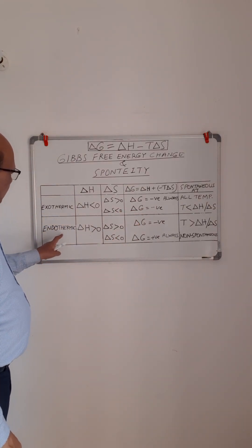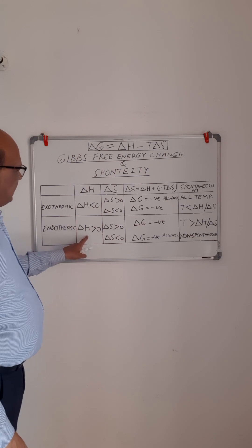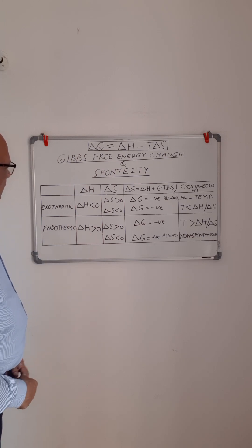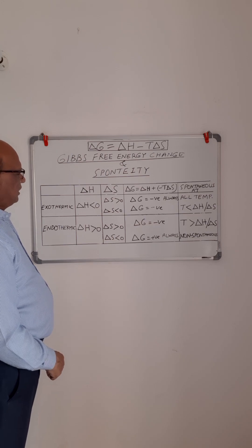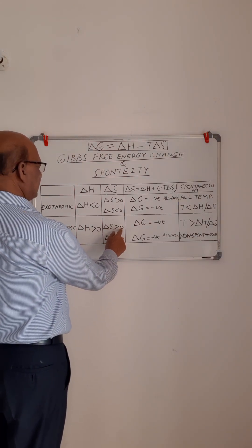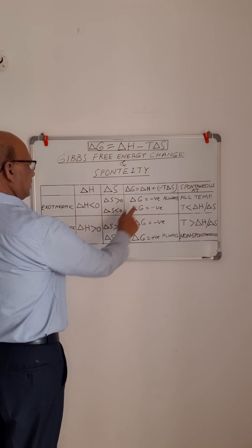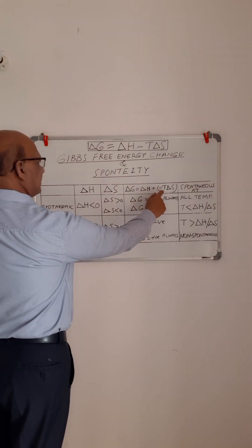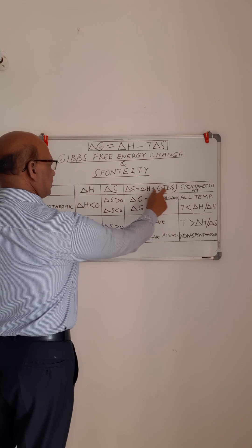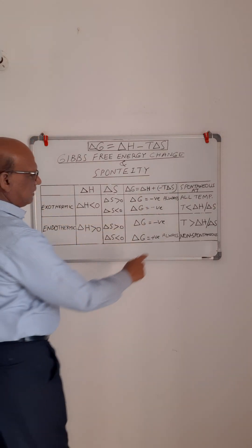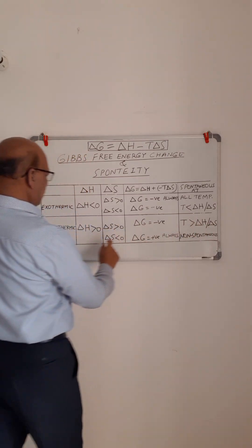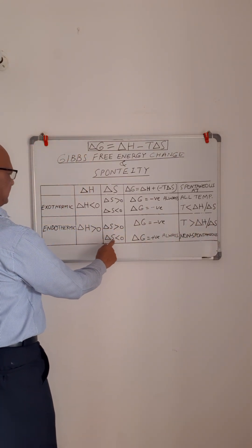Now we take the case of an endothermic reaction, where delta H is greater than zero because heat is absorbed in the forward direction. When delta S is greater than zero, the first term is positive and the second term is negative. So the negative term has to be more than the positive term, which happens when temperature is greater than delta H by delta S.